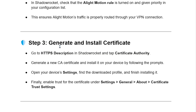Step 3: Generate and install a certificate. Go to HTTPS decryption in Shadow Rocket and tap Certificate Authority. Generate a new CA certificate and install it on your device by following the prompts. Open your device's settings, find the downloaded profile and finish installing it. Finally, enable Trust for the certificate under Settings, then General, About, Certificate Trust Settings.